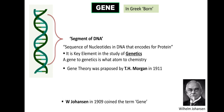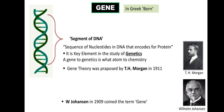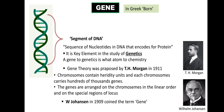The gene theory was put forward by Thomas Hunt Morgan, an American evolutionary biologist, geneticist, and embryologist who won the Nobel Prize in Physiology or Medicine in 1933 for his discoveries about the role of chromosomes in heredity. Morgan's theory has two important statements: chromosomes contain hereditary units, and each chromosome carries hundreds of thousands of genes.